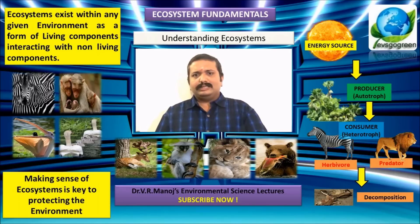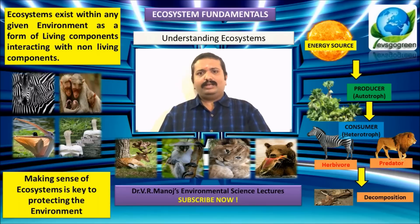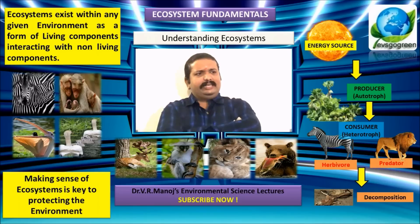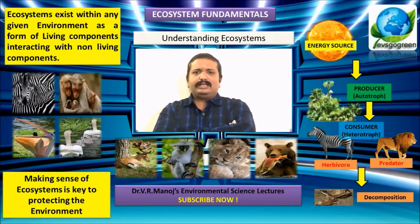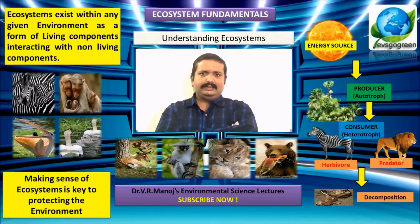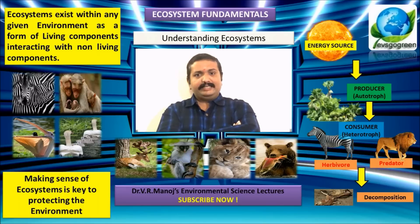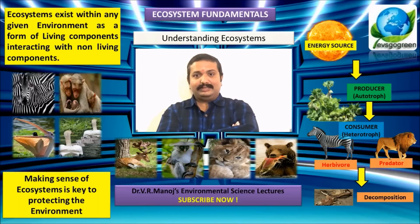What does ecosystem mean? Generally if you enter a forest area or any natural or even artificial system, you will see a general mix of several different kinds of organisms ranging from microorganisms, plants, insects, birds, animals, higher animals, predators, and human beings such as ourselves.